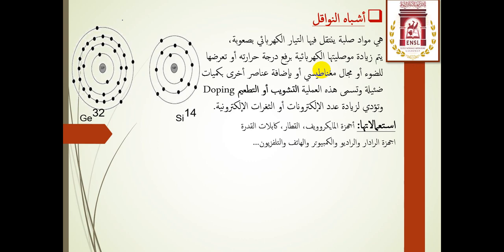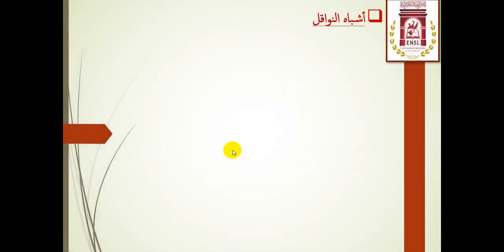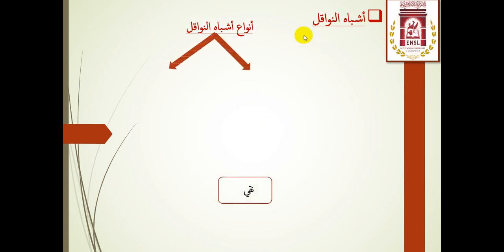استعمالات أنصاف النواقل: تستعمل في أجهزة المايكرويف والقطار وكابلات القدرة وأجهزة الرادار والراديو والكمبيوتر والهاتف والتلفزيون وغيرها من الأجهزة الإلكترونية. توجد في الجدول الدوري في المجموعة الرابعة، ومنها السيليسيوم والجيرمانيوم. وتوجد أيضا على شكل مركبات مثل زرنخيد الغاليوم وكبريتيد الكادميوم والأنديوم وغيرها، موزعة على شكل درج في الجدول الدوري.